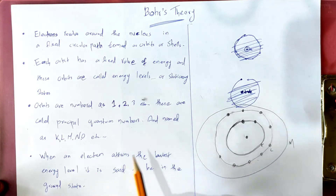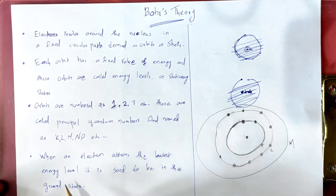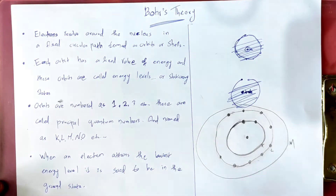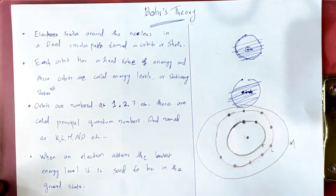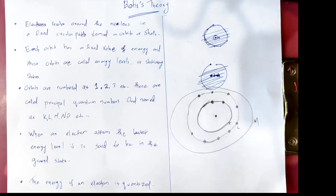When the electron is at the lowest energy level, it is said to be in the ground state.